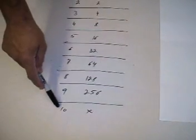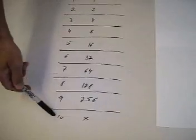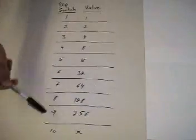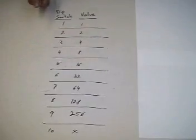Dip switch number 10 is usually reserved for special functions for that unit, usually like automatic, master, slave, or audio, music, whatever. So usually dip switch number 10 is a special function.